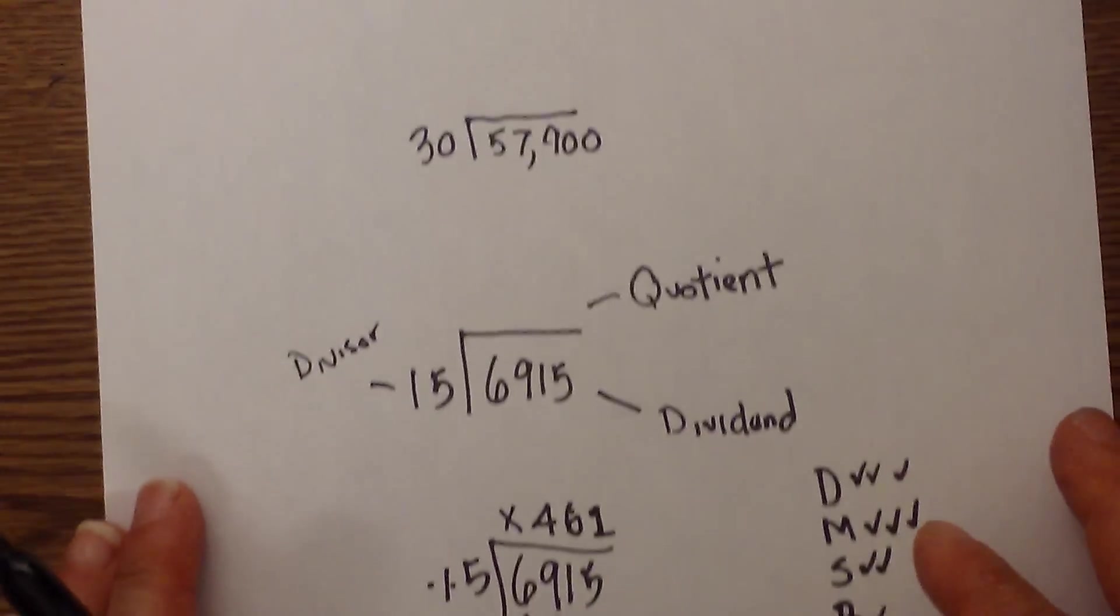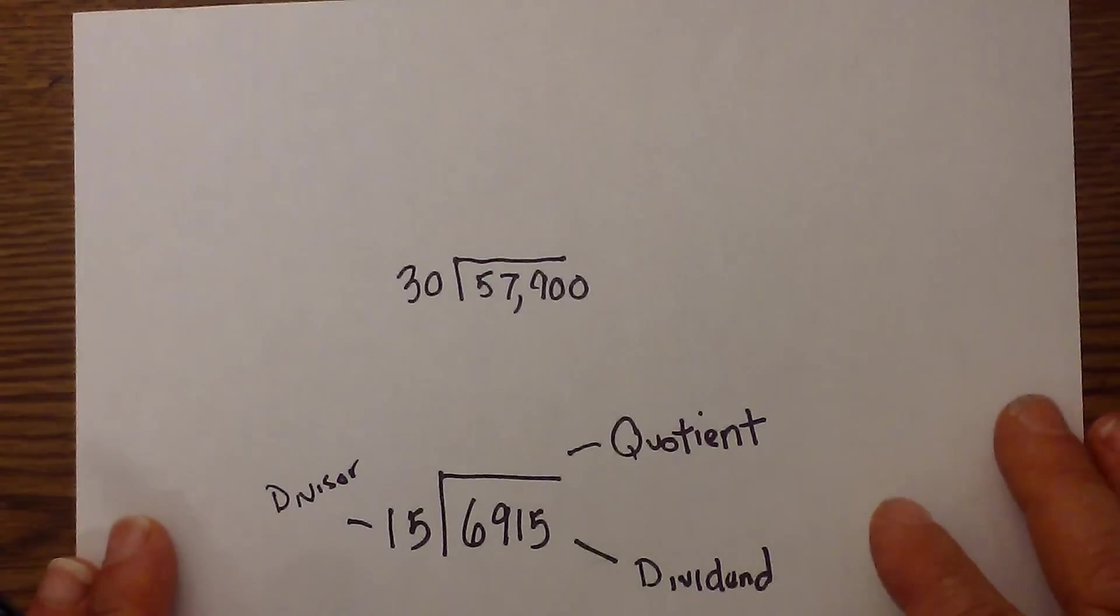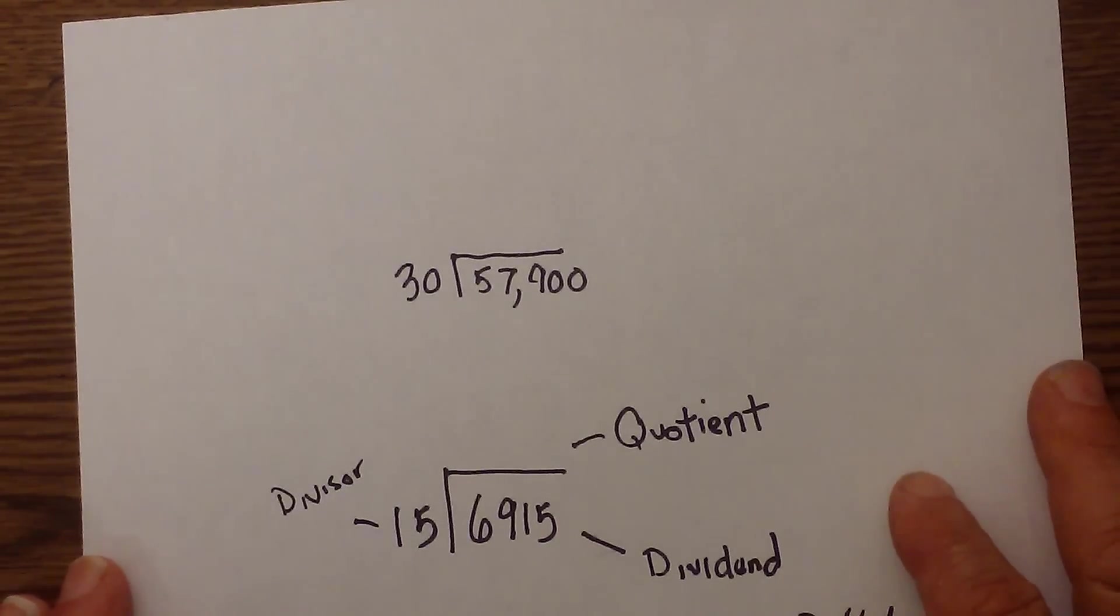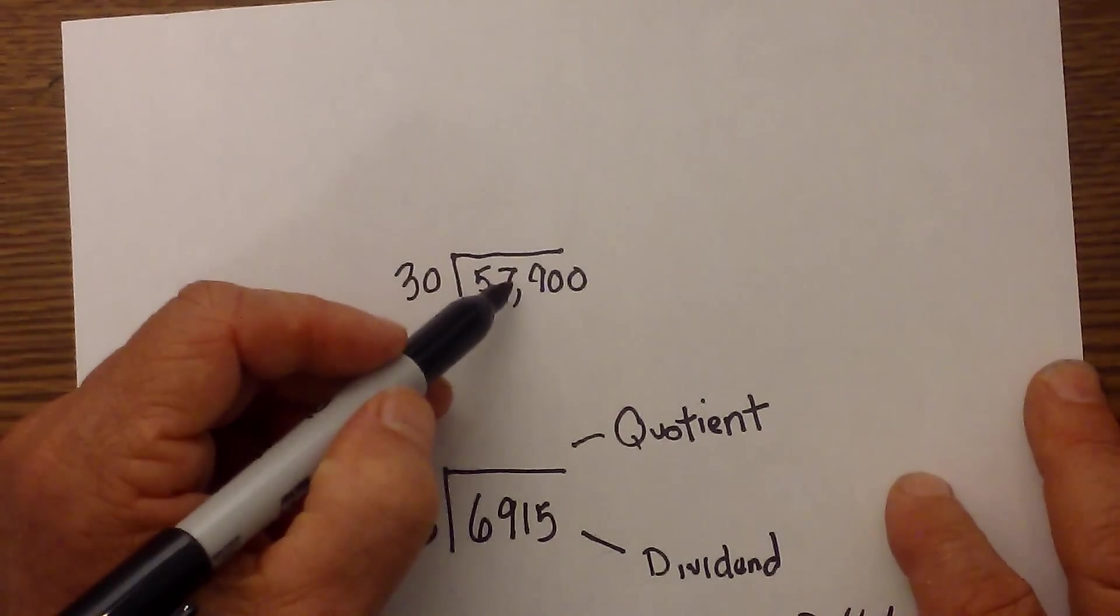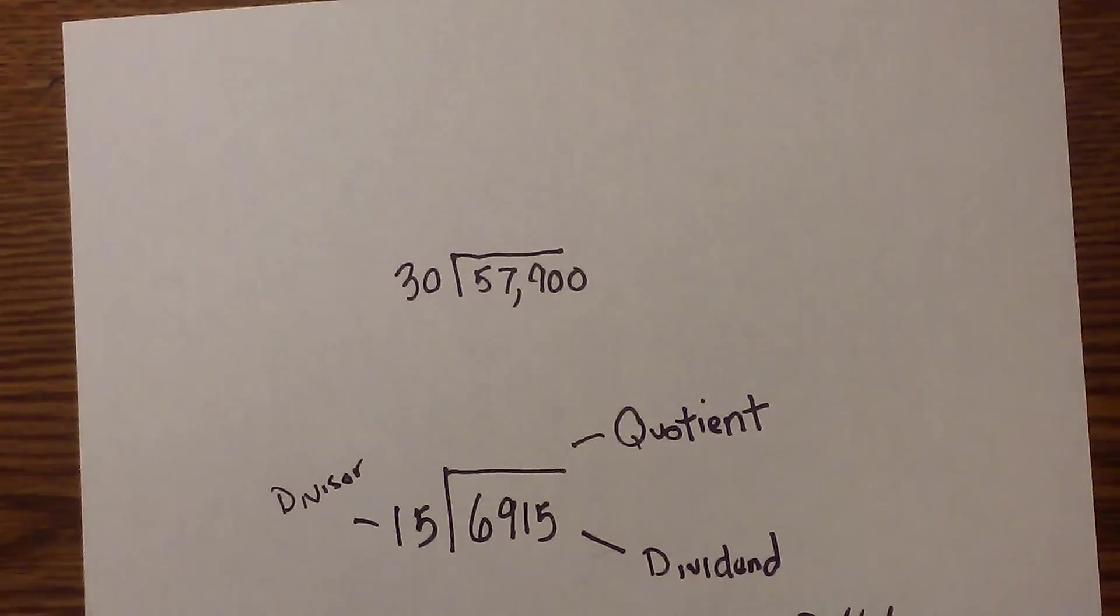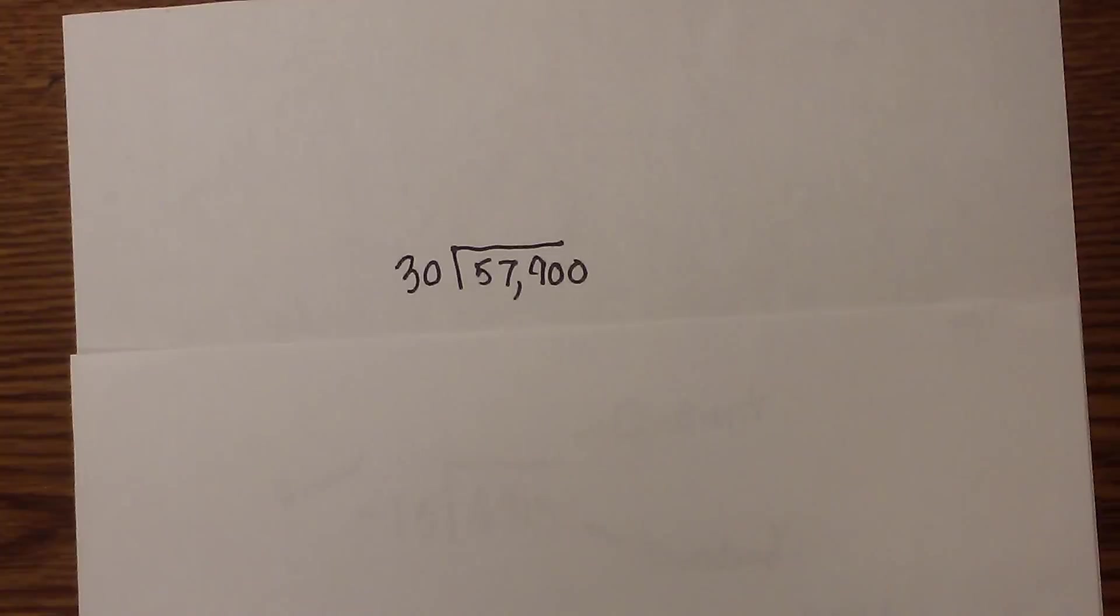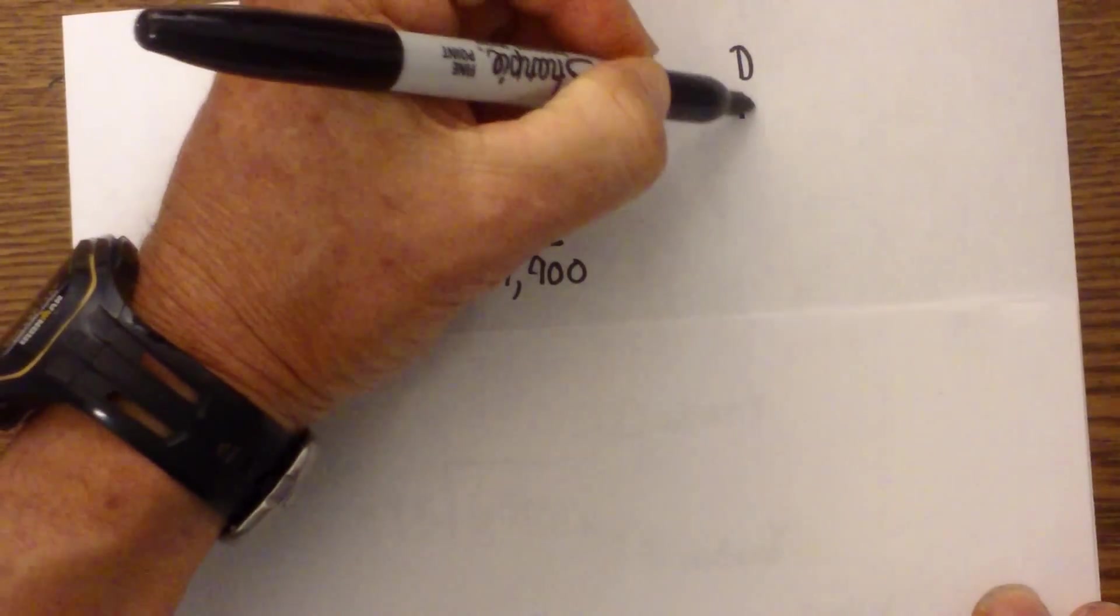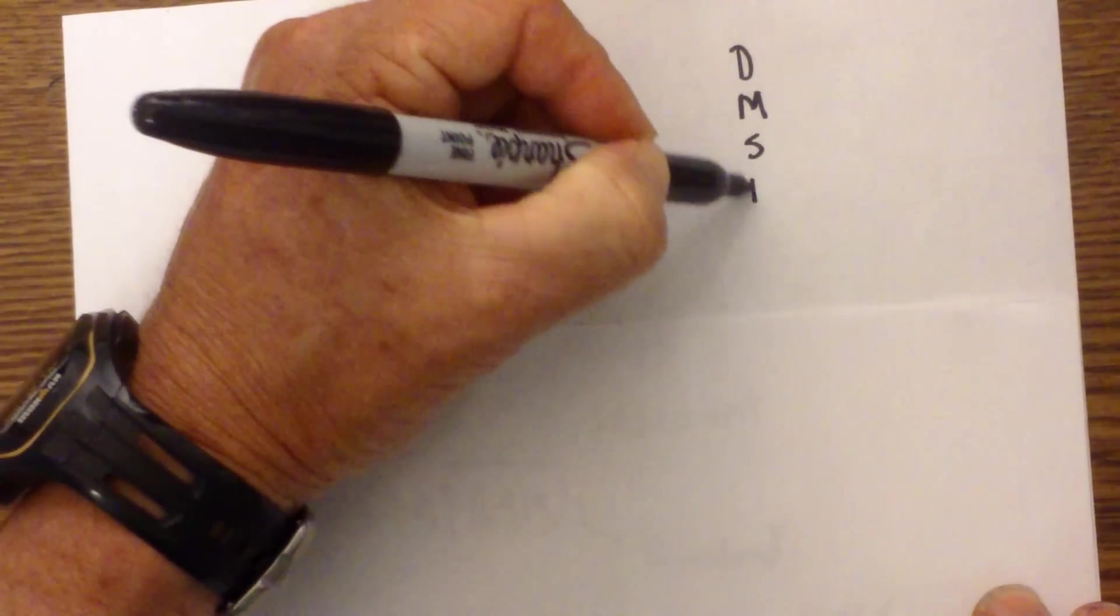Let's work another example. And if you follow these steps, it is not too bad. So we have 57,900 divided by 30. So let's start, let's write this down. Dad, mom, sister, brother.